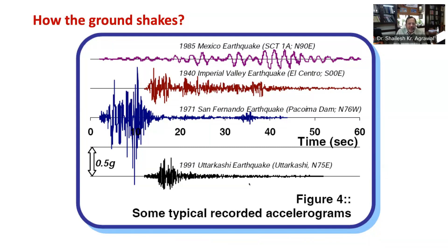The motion at the ground can be described in terms of displacement, velocity, or acceleration. The variation of ground acceleration with time recorded at a point on the ground during an earthquake is called an accelerogram or seismogram. The instrument used for measuring the earthquake is called a seismograph, and the recorded motion is known as the seismogram. When we record this earthquake as shown in this figure, the nature of the seismogram may vary and depends on a lot of factors.